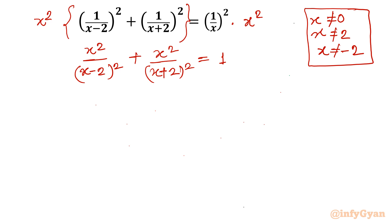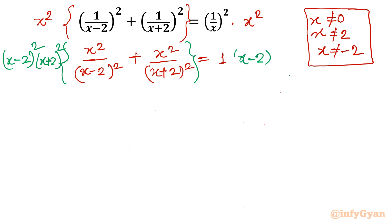Now I am going to multiply once again. This time I will multiply both sides by (x minus 2) squared times (x plus 2) squared, and the RHS also by (x minus 2) squared times (x plus 2) squared — we are doing this to get rid of the denominators.